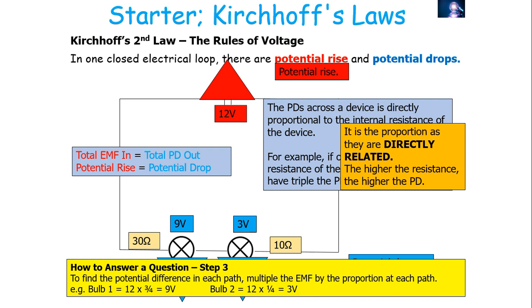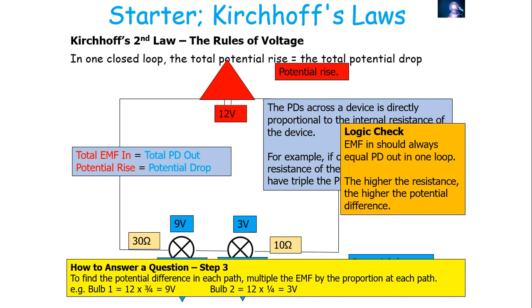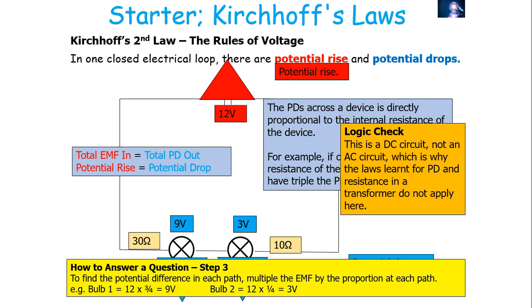For example, the bulb on the left takes three quarters of the resistance, so you do the EMF — which is 12 — times three quarters, giving a value of 9. As a logic check: the EMF in should always equal the PD out in one loop, and the higher the resistance of the output, the higher the potential difference. The two values added up will sum to equal the EMF, and the left has three times the resistance so it has three times the potential difference. Remember, this is only true for a DC circuit and not an AC circuit like a transformer.